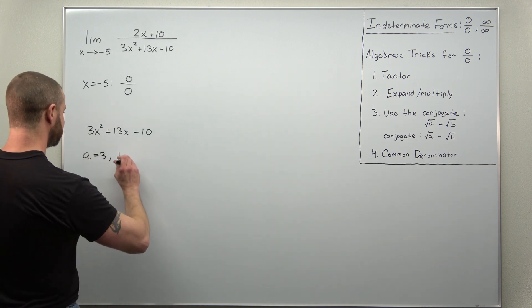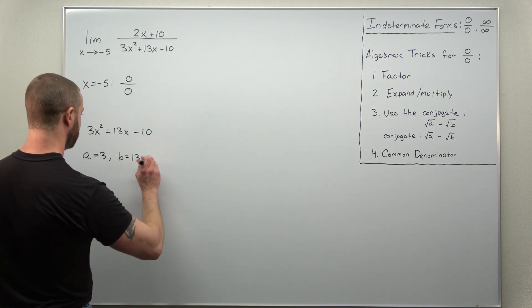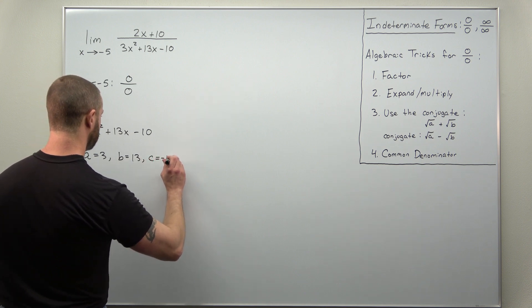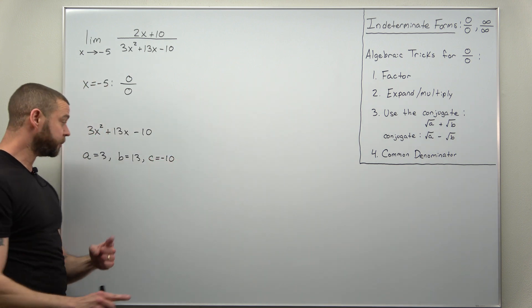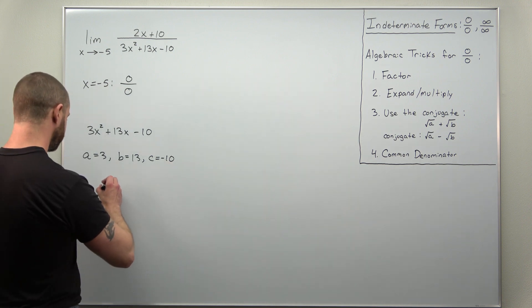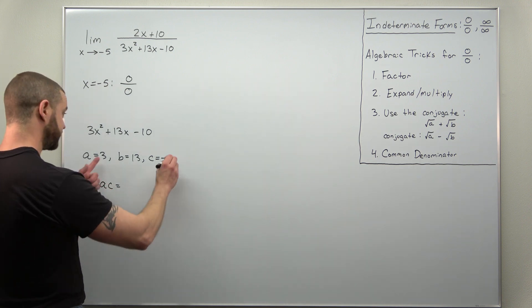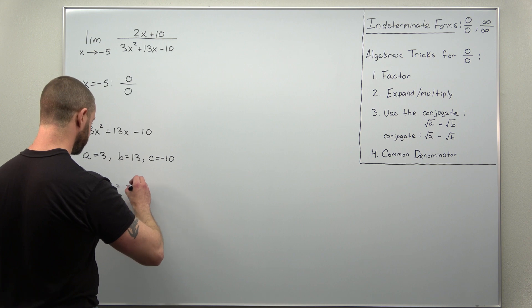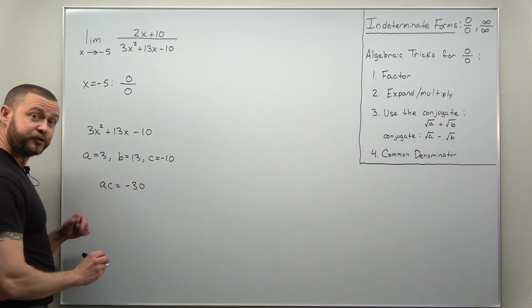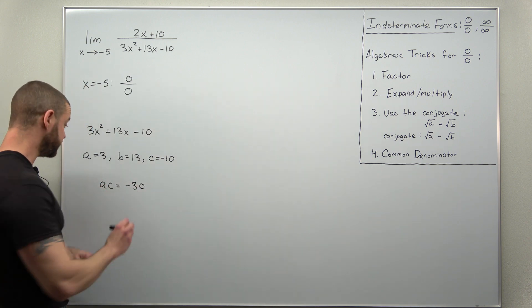A is 3, B is 13, C is negative 10. And we start by multiplying A times C. That's going to come out to negative 30. And we also look at the B term which is just 13.